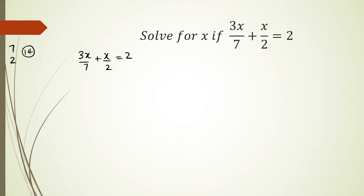So that means I need to multiply 3x over 7 by 2, so 7 times 2 is 14. That means the numerator is also going to be multiplied by 2. Likewise on this side, I would have to multiply 2 by 7 and the numerator by 7 so that I have the same denominator.